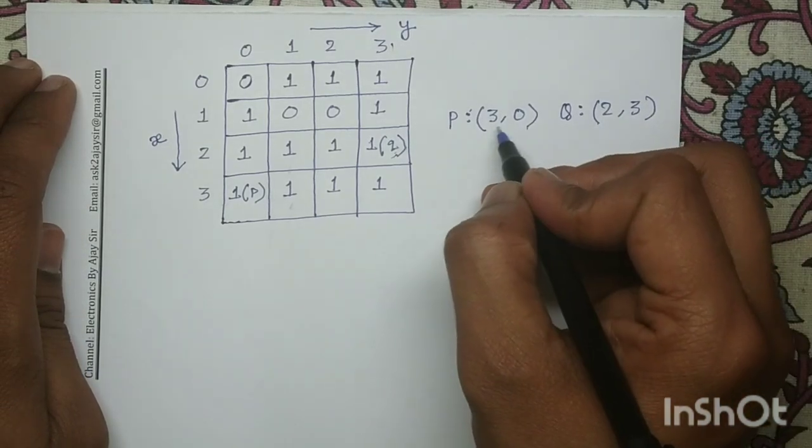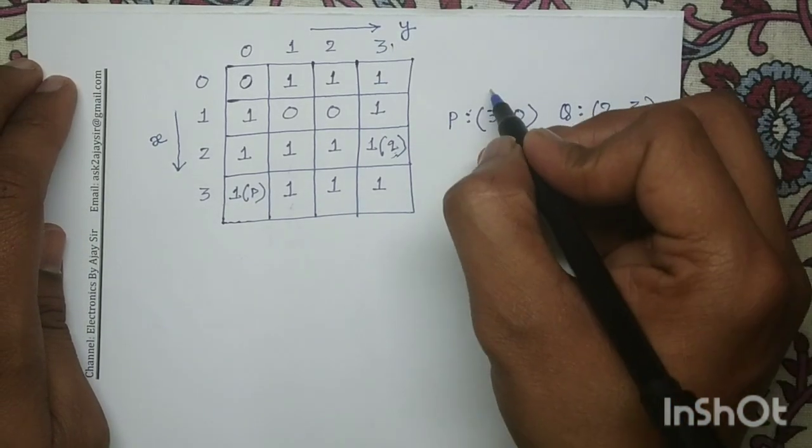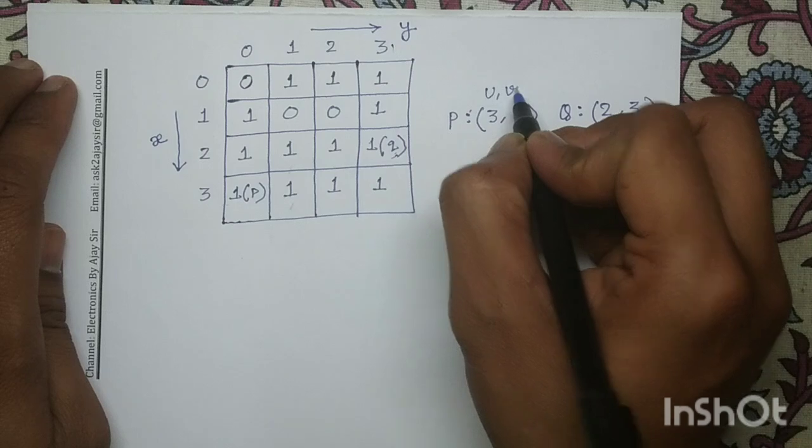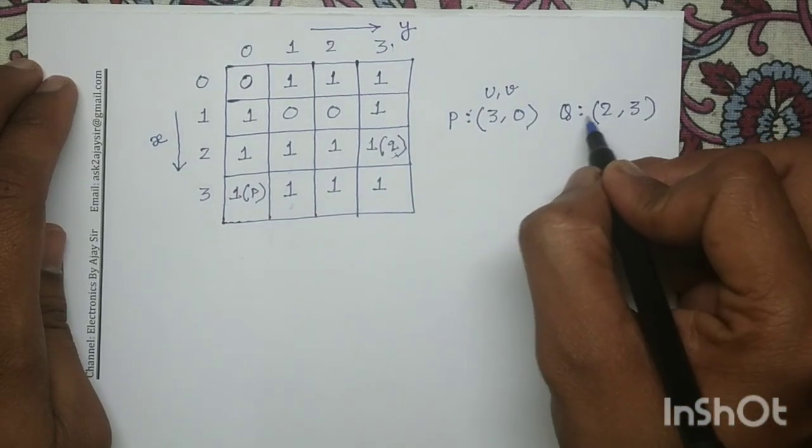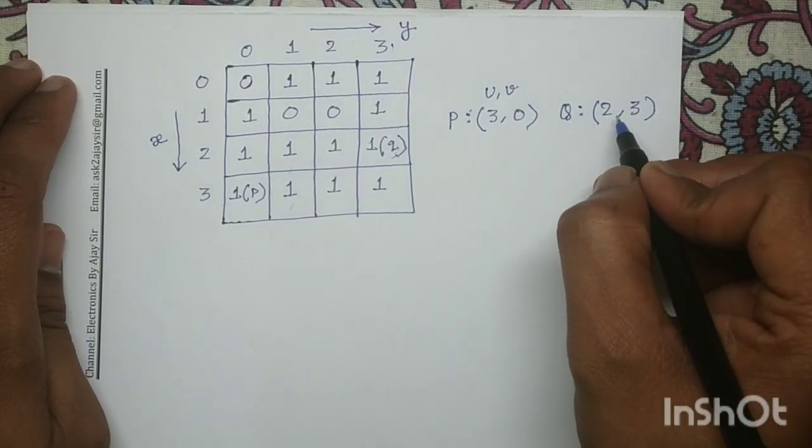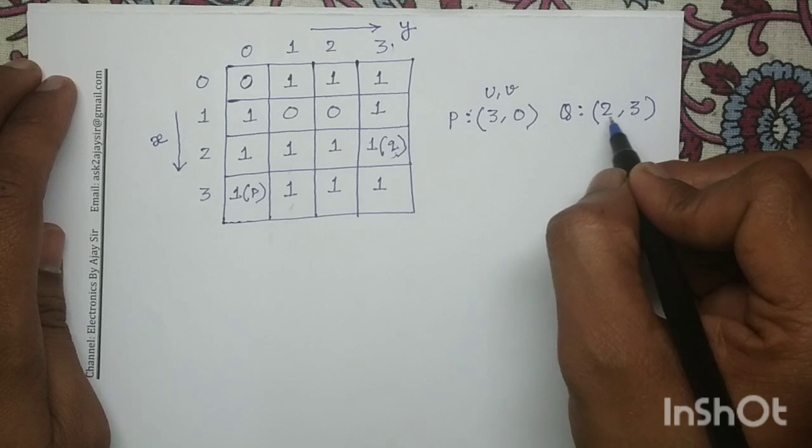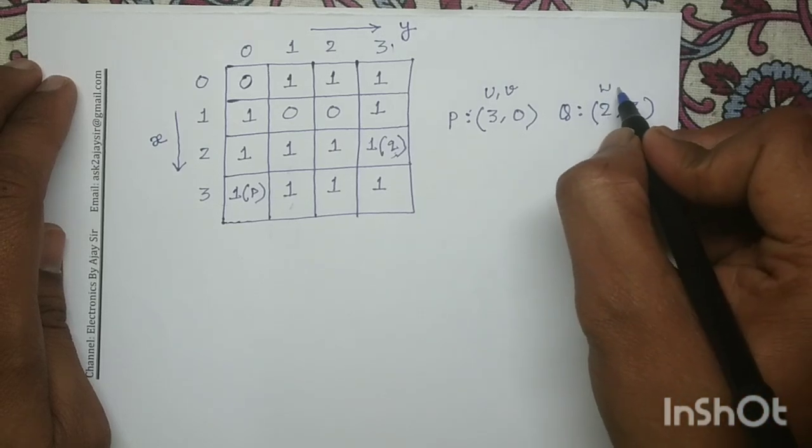Now considering (3,0) as U,V and the coordinate (2,3) of pixel Q as W,X.